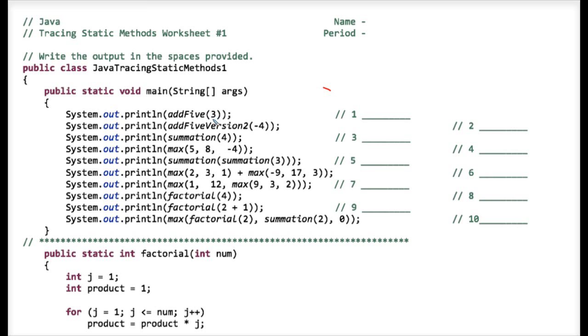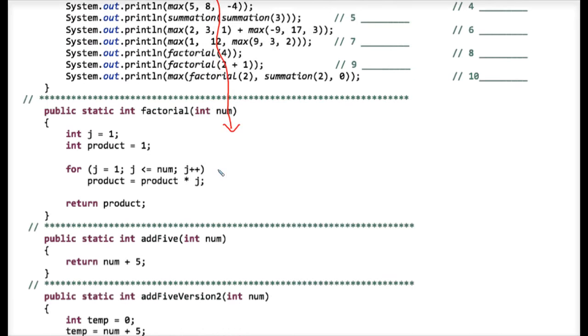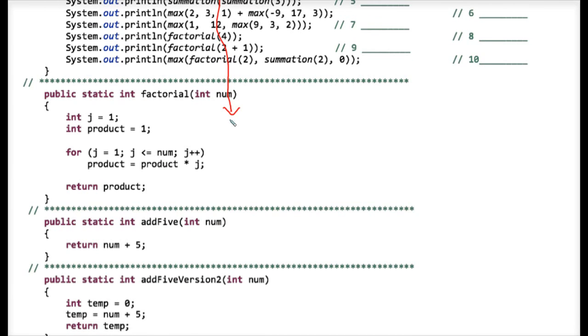That three flies downfield as a parameter and plugs into, I bet it's the variable, I bet it's a parameter named num. Yep, right here it is. It plugs into num.